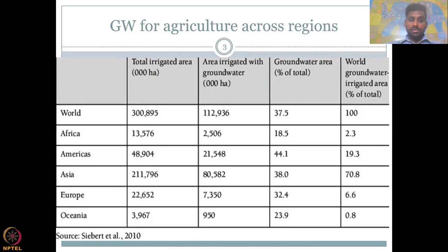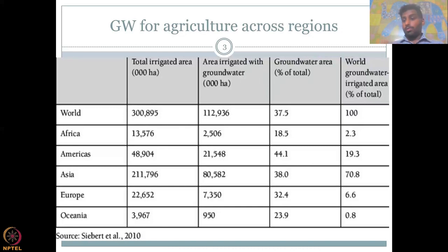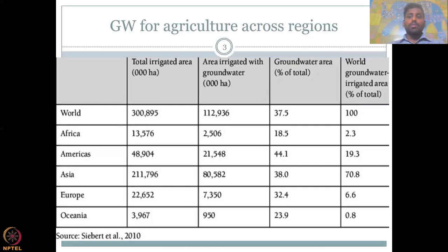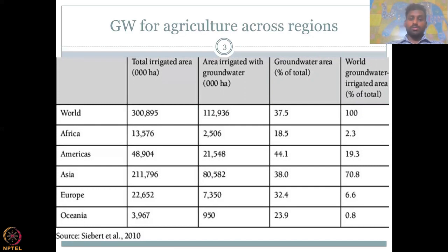Let's see how the major continents are using water for irrigation. Africa uses around 18.5% of groundwater for total area irrigated — only 18.5% is under groundwater irrigation — and when you compare it to the world, it's very small: 2.3%. Africa has big aquifers with good volume and recharge, but it is economically very expensive to extract the water. They are limited with energy and mechanical resources to access this water, so it is called an economically stressed situation.